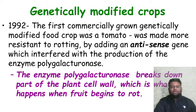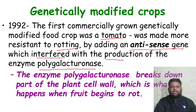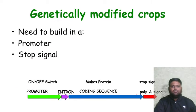The first commercially grown genetically modified crop was the tomato. It was made resistant to rotting by addition of an antisense gene, which interfered with the production of the enzyme polygalacturonase. Polygalacturonase breaks down the plant cell wall, which is what happens when the fruit begins to rot.